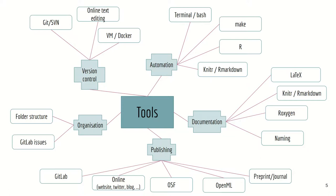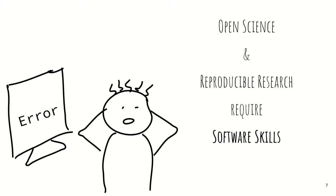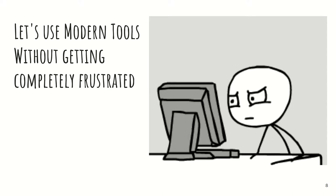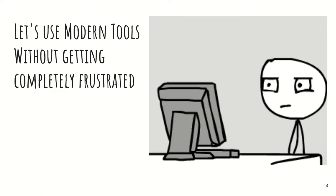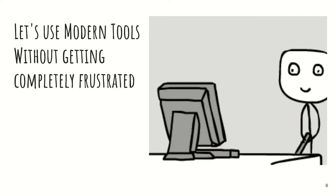And publishing, obviously, preprints and then also journal articles. So if you look overwhelmed because all the tools I showed — like Make or Docker — seem scary because you've never heard of them before, then don't worry. This is normal because open science and reproducible research require tremendous software skills. What I want to do in the future, because I don't think that every researcher can do this whole thing on their own, is help them.